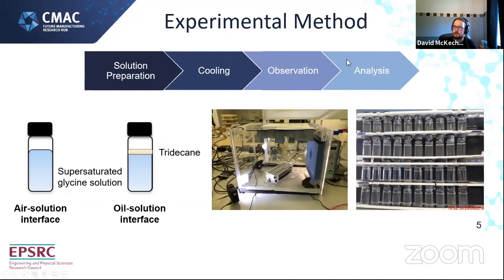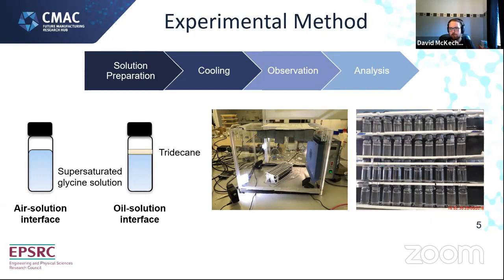Our experimental method is designed to carry out a large number of small-scale experiments simultaneously. We prepare many small glass vials of supersaturated glycine solution — control experiments with just solution and sealed air above, and experimental vials with a layer of tridecane on top to provide the liquid-liquid interface. The vials are prepared at high temperature and then cooled to generate supersaturation, then moved into an incubator for isothermal temperature control. Webcams on either side of the vial rack take pictures every five minutes to determine when nucleation occurs.